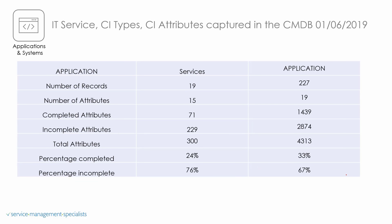Let's have a look at applications. We've defined 19 services, but there are 227 applications, which gives us a total amount of attributes at 4,313. At this stage the percentage complete is at 33%, so it's not actually looking too good. We've got some work to do in this domain — really looking at getting those attributes completed. But before we do that, we want to ensure that those attributes are meaningful and that they mean something for the business. So quite a lot of work to do in the application space.